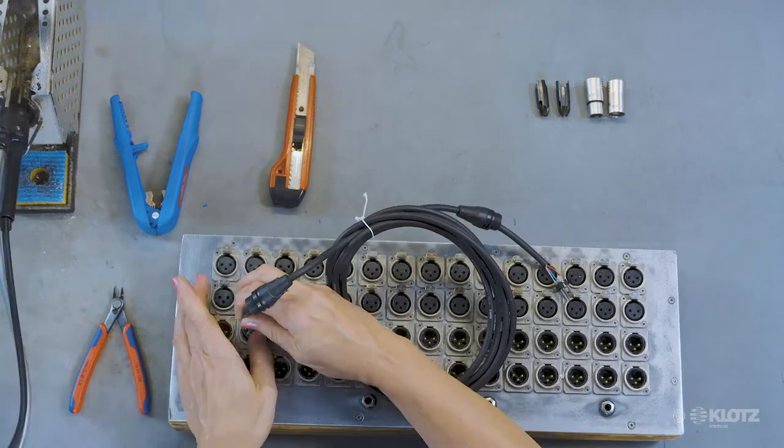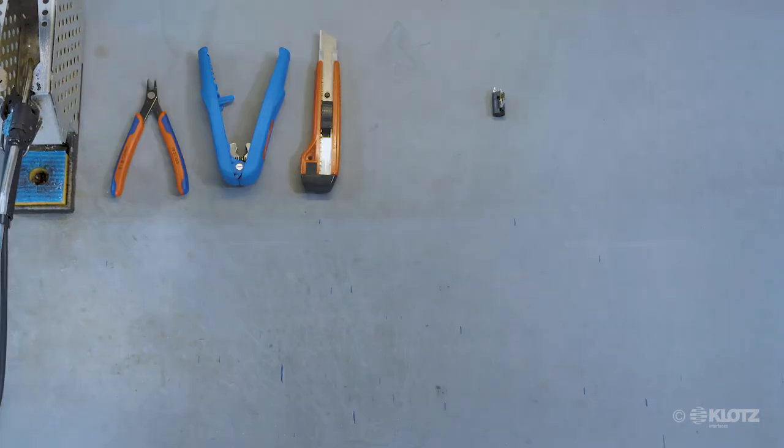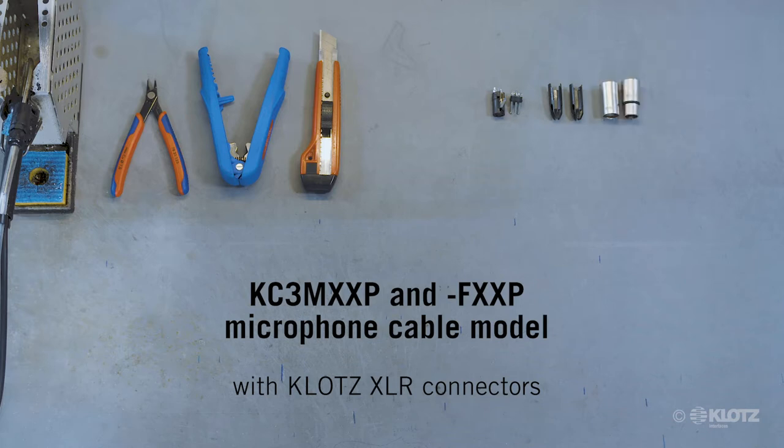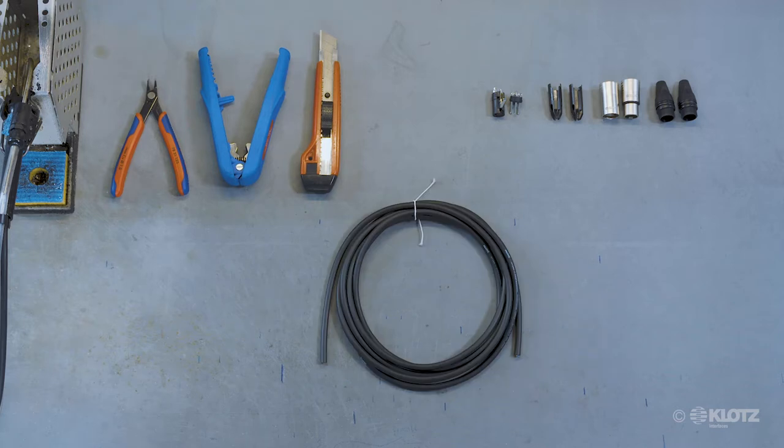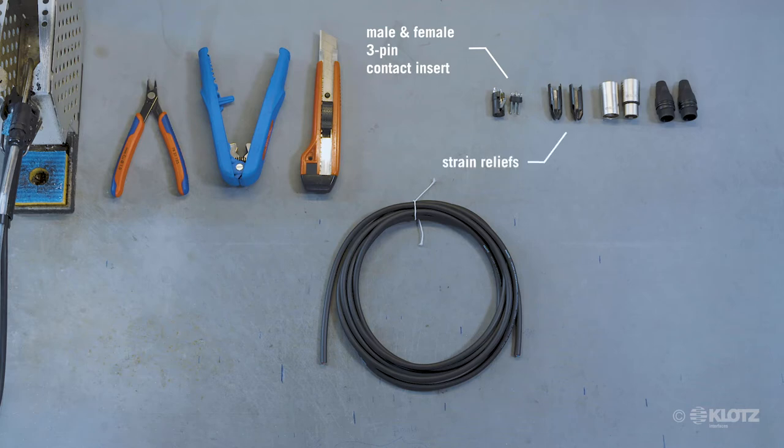In preparation of your cable termination, please disassemble the Glotz connector model KC3MXXP and FXXP into its single parts: the male and female 3-pin contact insert, the strain reliefs, the metal connector housings and their boots.